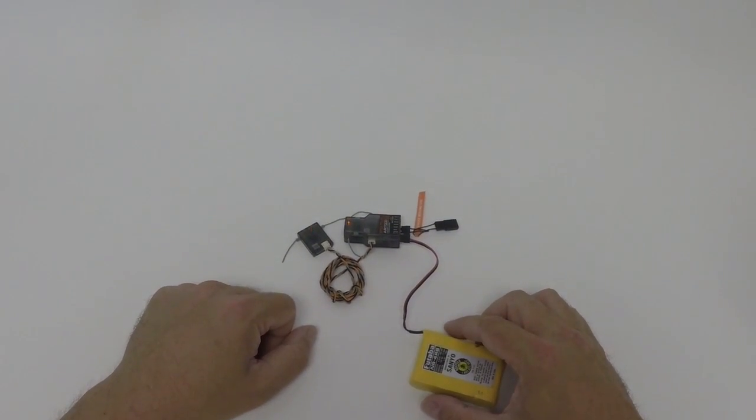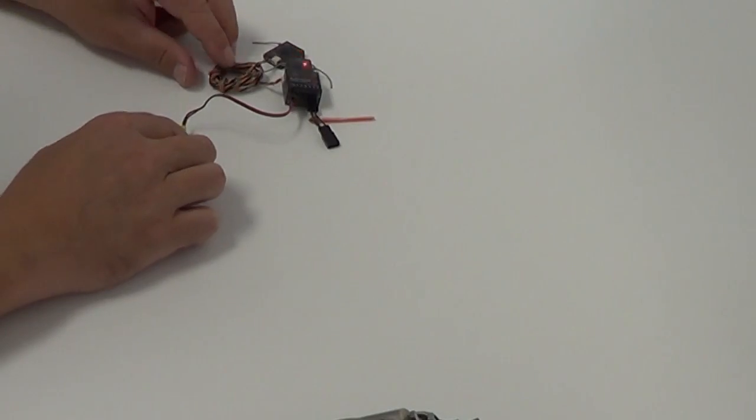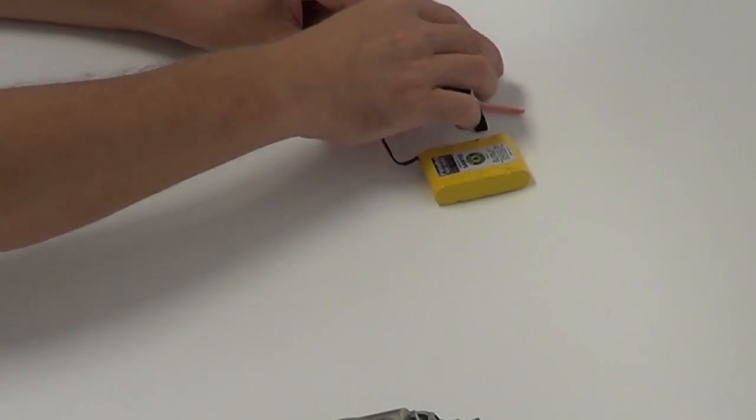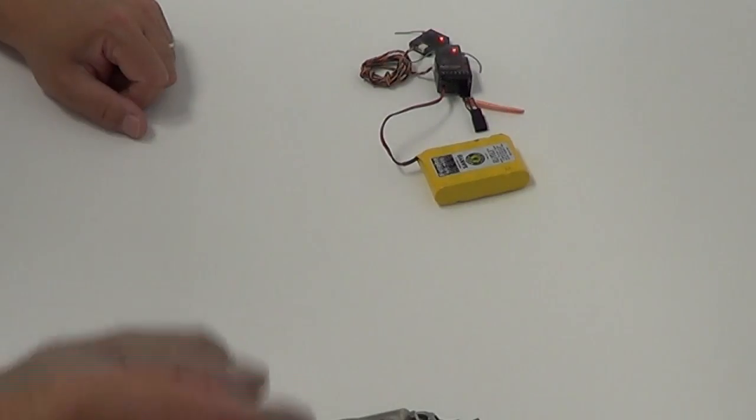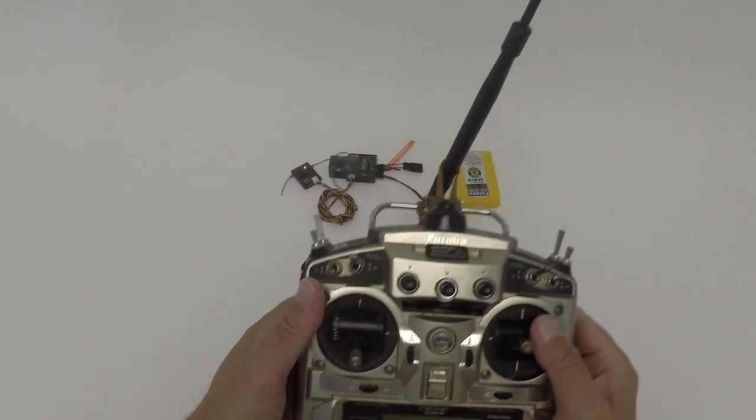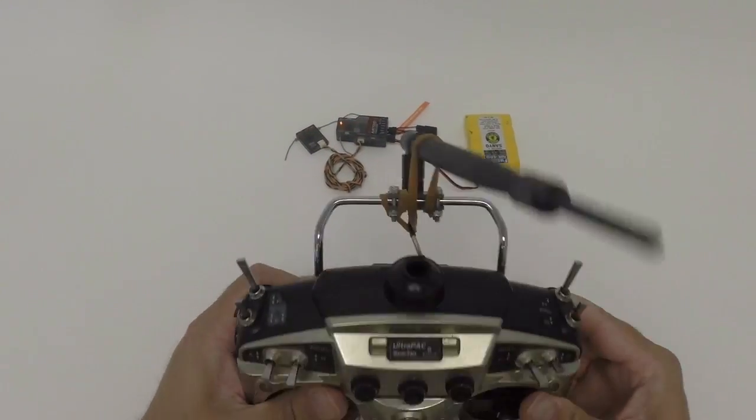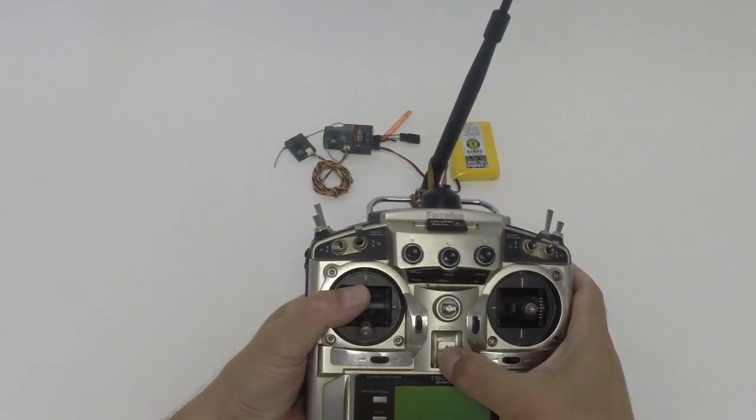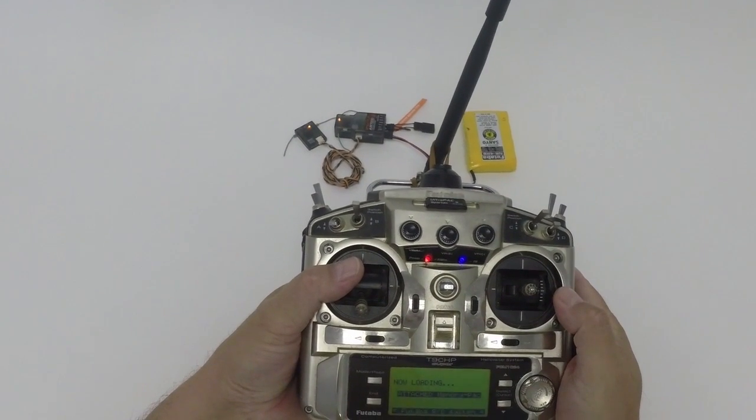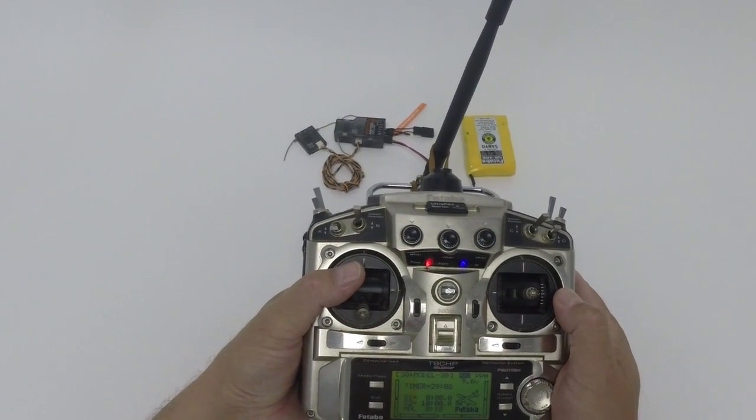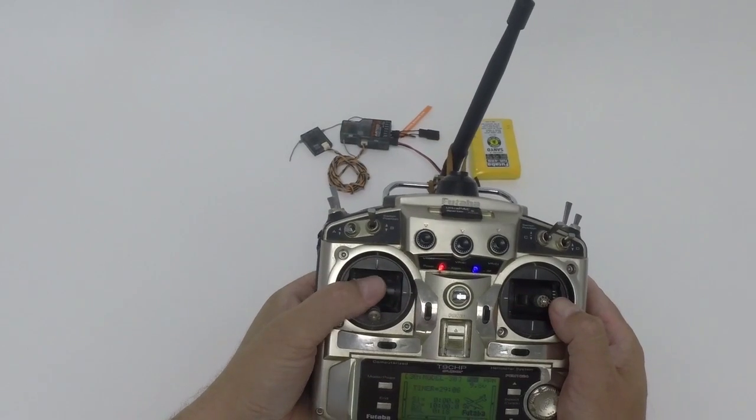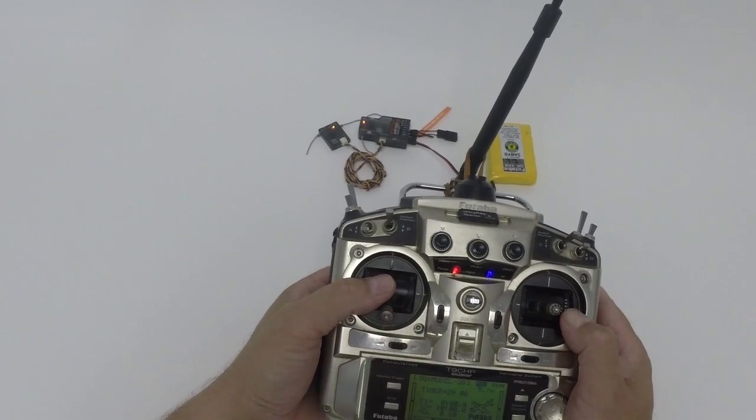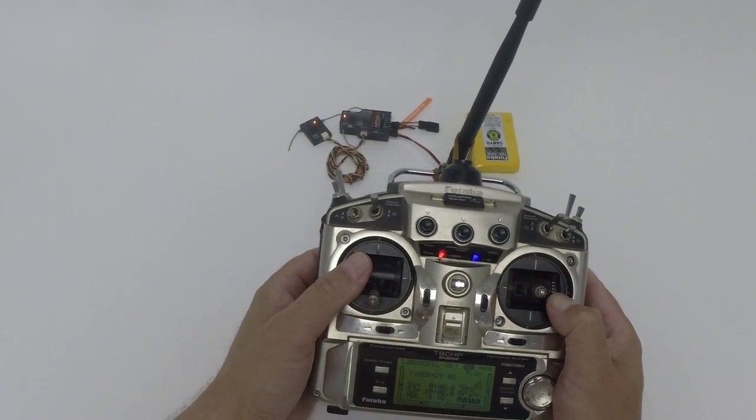As you can see the LEDs are flashing on both of them. This indicates that the receiver with the Satellite Receiver is in binding mode right now and it is going to accept our binding from the transmitter. In order to bind that with our transmitter I have to hold down the bind button on the back and turn on the radio, at which you can see that the lights stop flashing and then one of them is flashing and the other one is becoming solid. Now both of them are bound properly.